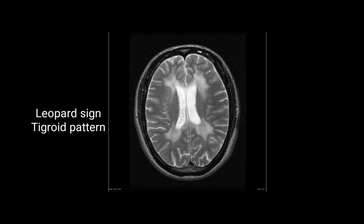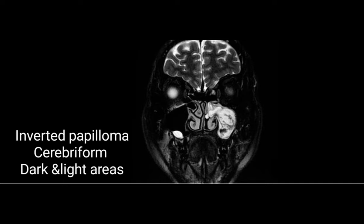The next image is of leopard sign or tigroid pattern. It is seen in many conditions like mucopolysaccharidosis and other inherited conditions. The leopard sign or tigroid pattern refers to white and black stripes in the brain matter.